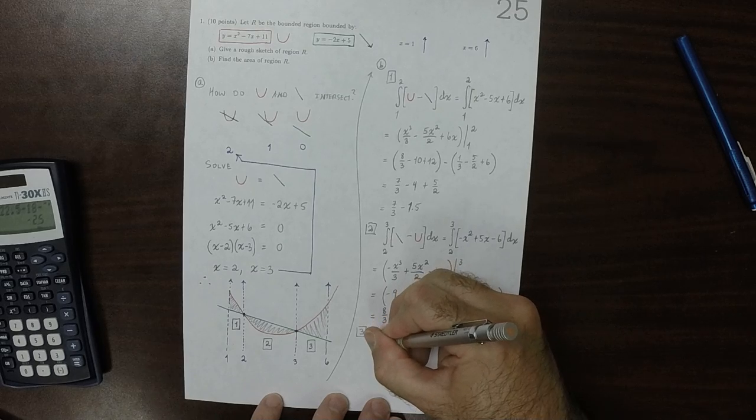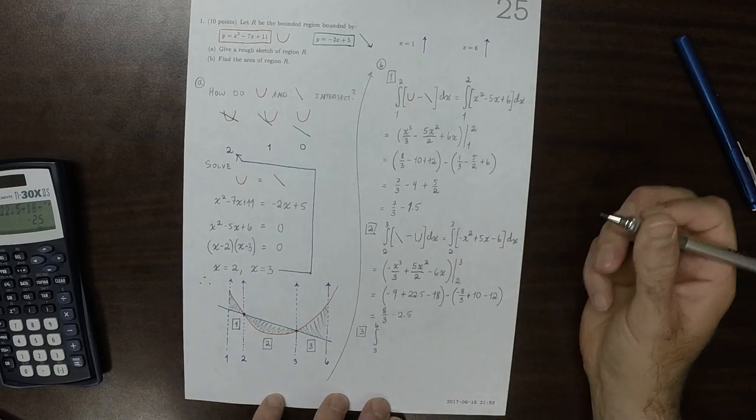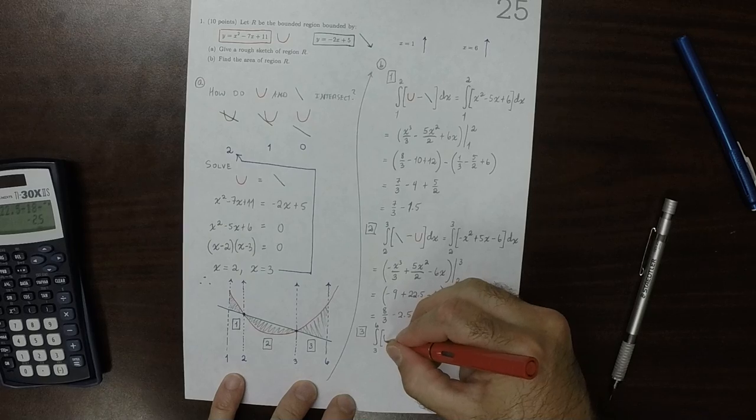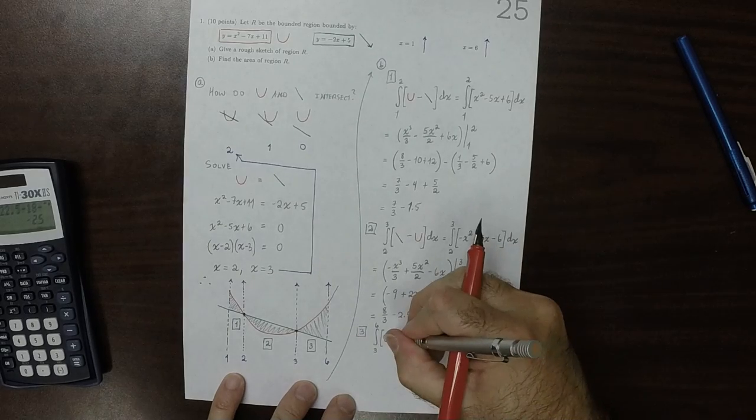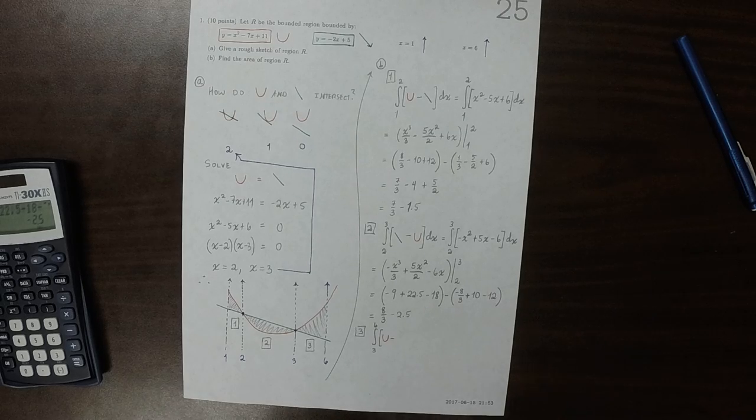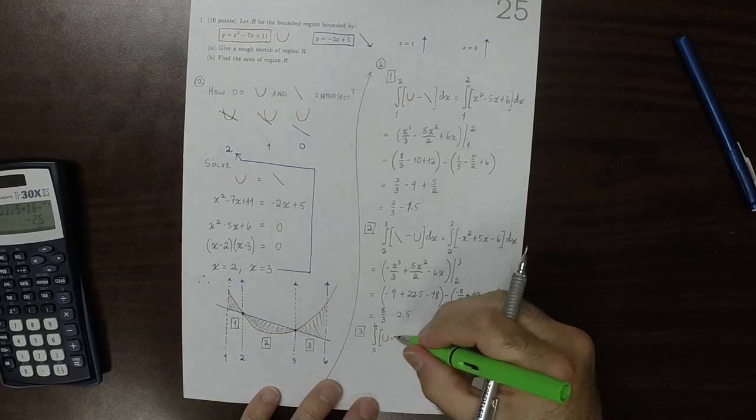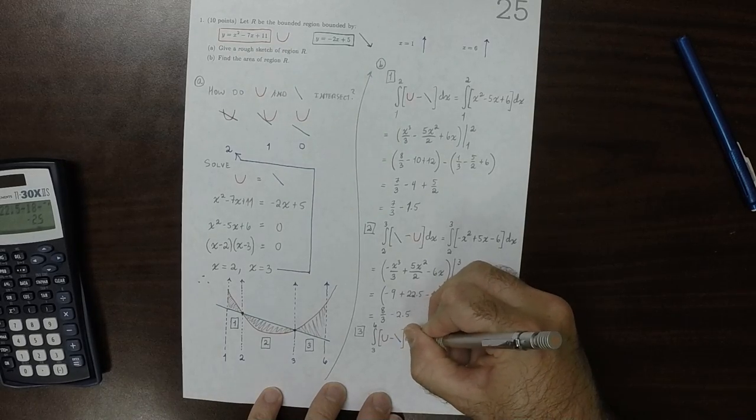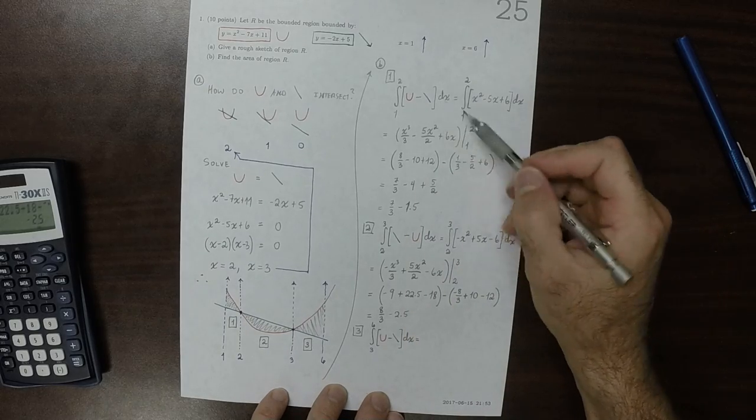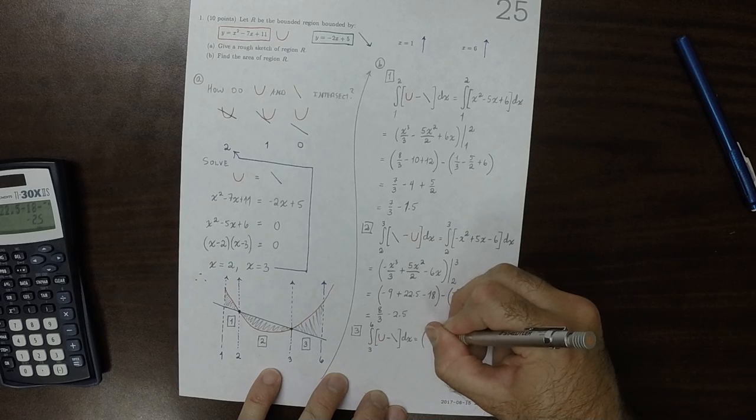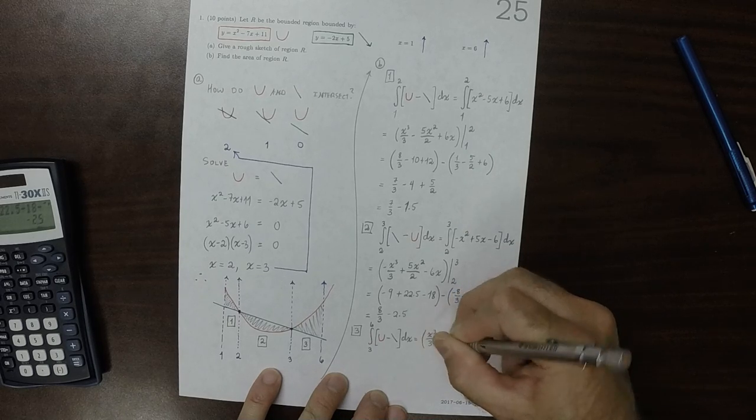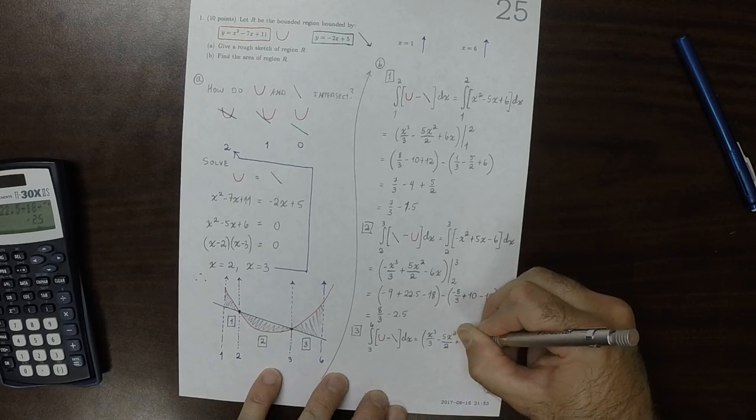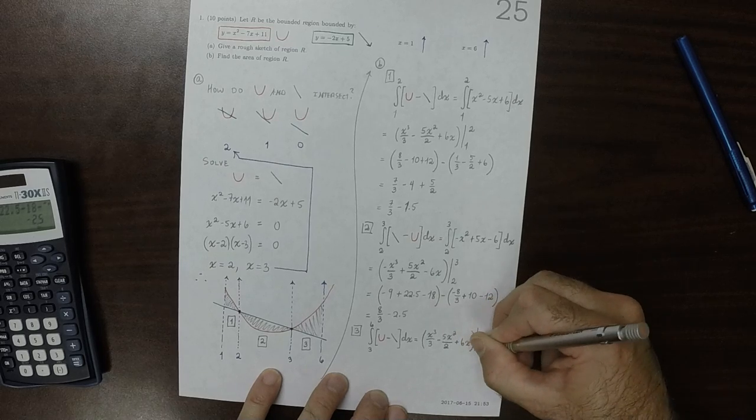Okay. Region 3 is the integral from 3 to 6 of, now it's going to be parabola minus line again, minus line. So that's exactly what this one is, so this will be x cubed over 3 minus 5x squared over 2 plus 6x, except now the evaluation is from 3 to 6.